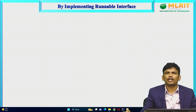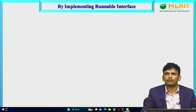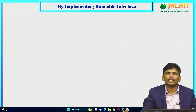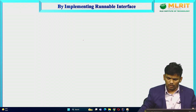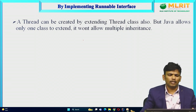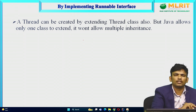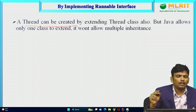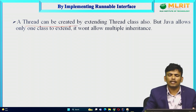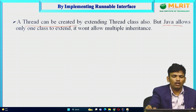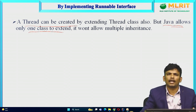This is the second way of creating a thread. The first way I already explained in the previous session — by extending a Thread class, we can create a thread. Also, by implementing the Runnable interface, we can create a thread. A thread can be created by extending a Thread class, but Java allows only one class to extend at a time.